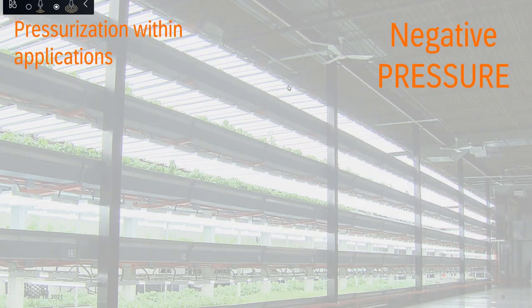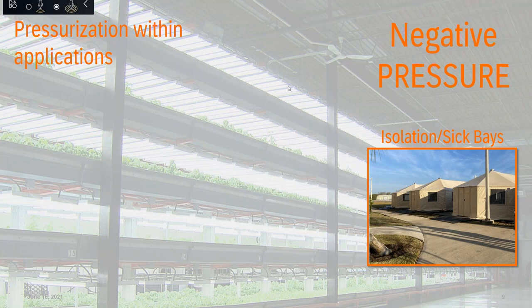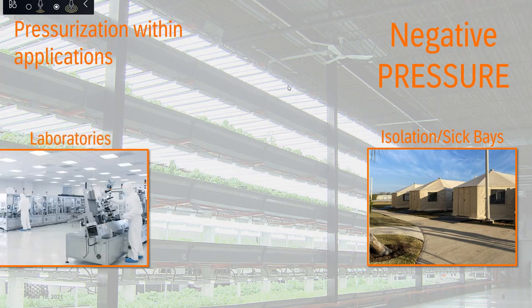Now switching gears and looking at applications that require negative pressure — isolation and sick rooms. This happened a lot at the beginning of our COVID pandemic, where we had remote pop-up sick bays. There was a lot of overflow at certain hospitals, and they actually put negatively pressurized tents and zones outside of the hospital facilities to be used as COVID-19 overflow. These were absolutely negatively pressurized. Because if you have a tent filled with a few COVID-positive people, the air they're breathing and coughing is contaminated, and you want to ensure that that air stays within the environment itself and doesn't escape to potentially contaminate others.